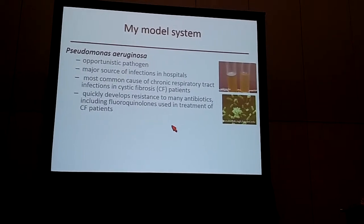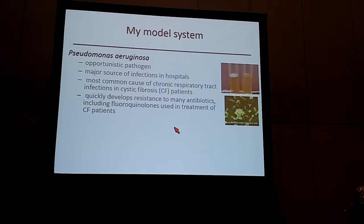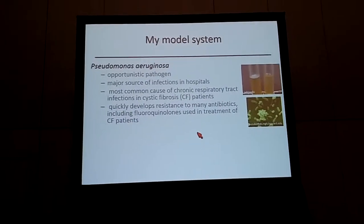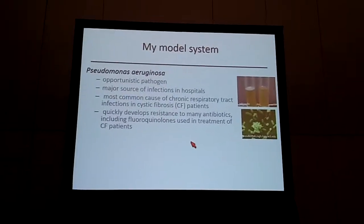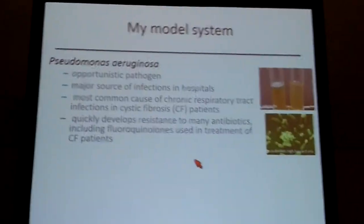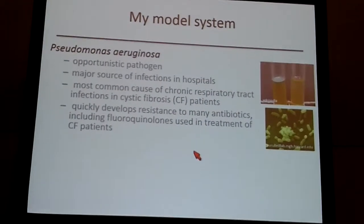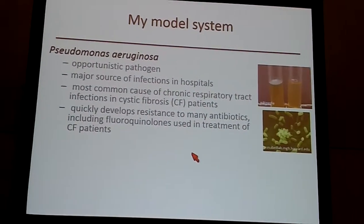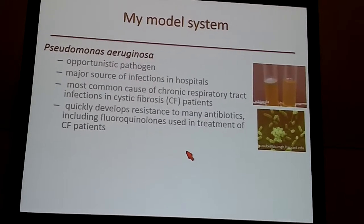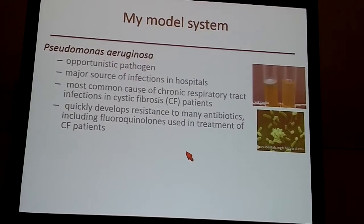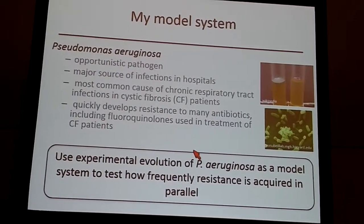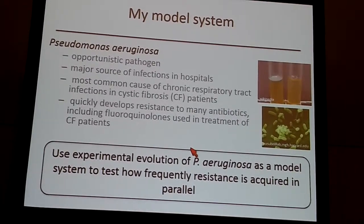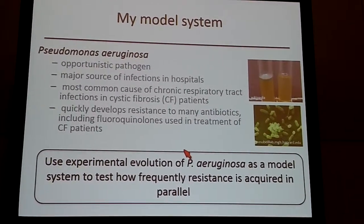To explore these questions, I'm using a model system in microbial experimental evolution. My organism of choice is Pseudomonas aeruginosa — an opportunistic pathogen and a huge source of hospital infections. It's the most common cause of chronic respiratory tract infections in cystic fibrosis patients, and it quickly develops resistance to many antibiotics, including fluoroquinolones like ciprofloxacin, which I'll be using. These are used in the treatment of cystic fibrosis patients. To recap, I'm using experimental evolution of Pseudomonas aeruginosa to test how frequently resistance is acquired in parallel.